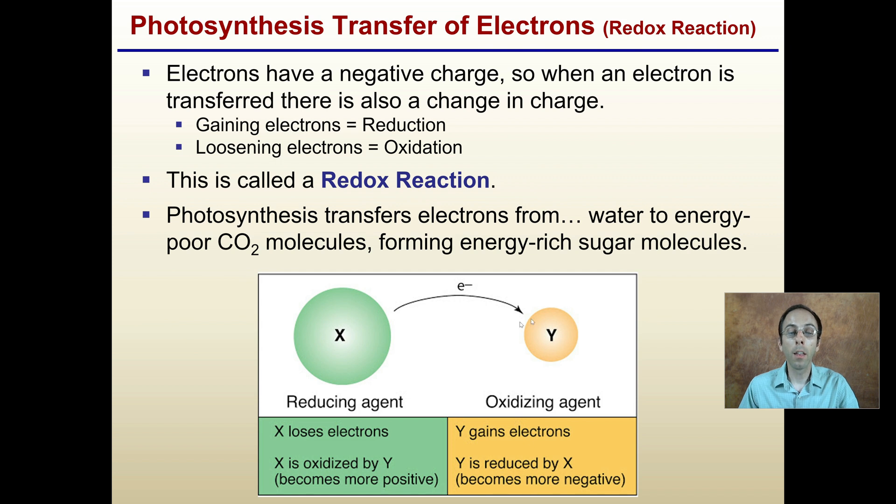When you're transferring electrons, something is getting reduced and something is getting oxidized. Photosynthesis transfers electrons from water to energy-poor carbon dioxide molecules, forming energy-rich sugar molecules. Gaining electrons is part of the reduction in charge, and losing electrons is oxidizing.